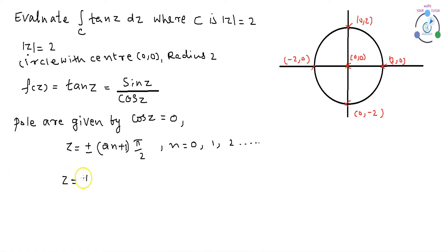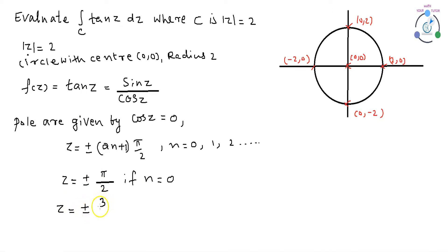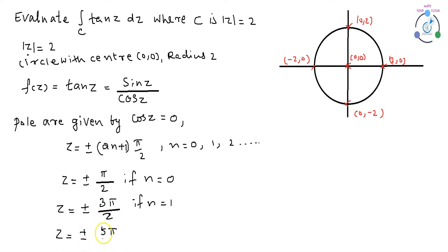Substituting n = 0 in ±(2n+1)π/2, we get z = ±π/2. If n = 1, z = ±3π/2. If n = 2, z = ±5π/2.